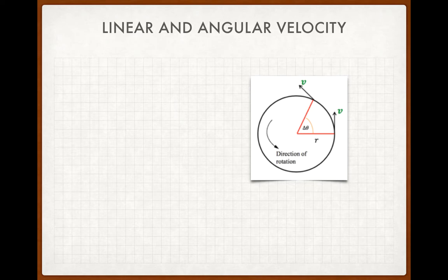If it moves faster or rotates faster, it'll move through more of an angle in the same amount of time. So what we can say is angular speed is the angle that an object rotates through per second.